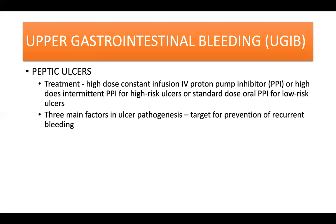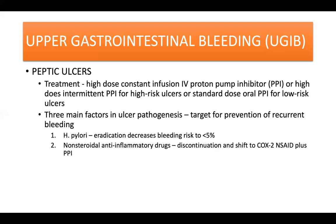Prevention of recurrent bleeding focuses on three main factors in ulcer pathogenesis. Eradication of H. pylori in patients with bleeding ulcers decreases bleeding risk to less than 5%. If a bleeding ulcer develops in patients taking NSAIDs, then the NSAIDs should be discontinued. If they should be given, a COX-2 selective NSAID plus a PPI is recommended.